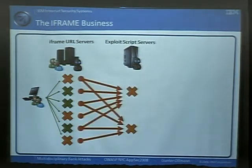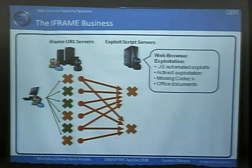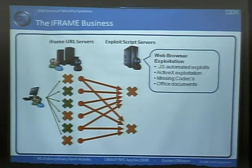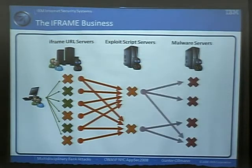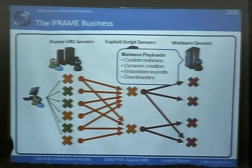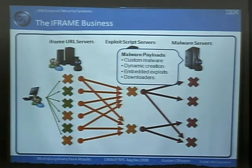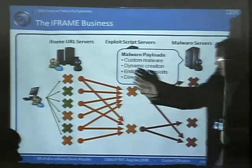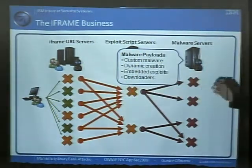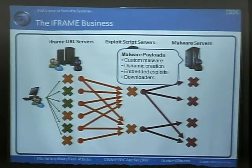This stuff then goes on to the exploit script service — servers that have been compromised or are parts of botnet empires. They are serving up malicious JavaScript, ActiveX exploits, missing codecs, office documents, and things like that. This is where part of the malware comes in: an exploit, which then connects back to the malware servers providing all the custom malware and banking trojans. The thing to realize is that all these different parts are different groups, more often than not, and they're all working together as part of an ecosystem.